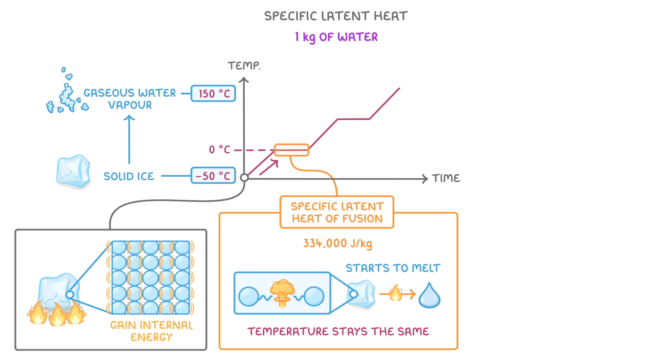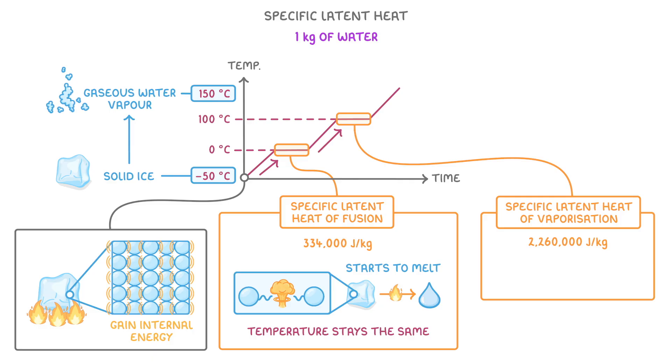Once this much energy has been provided though, and the ice has all melted into liquid water, then the temperature will continue to increase, all the way to 100 degrees, where the same process happens again. This time though, the energy required is the specific latent heat for vaporization, which is 2,260,000 joules per kilo. And once the water has all boiled into water vapor, its temperature continues to increase like normal.